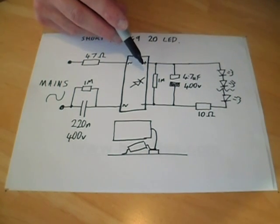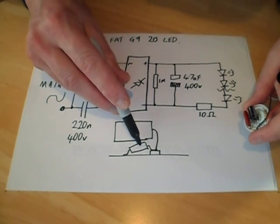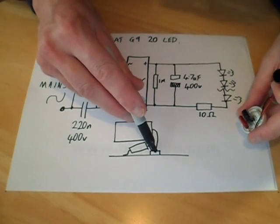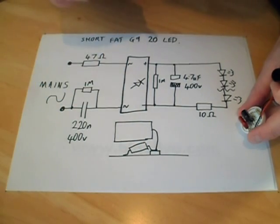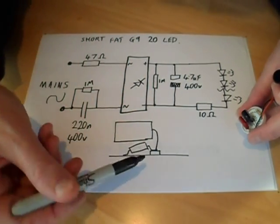To save space in here, they have... This is the bridge rectifier, this is the 1 mega ohm discharge resistor, and this is the capacitor. They've kind of sat the...